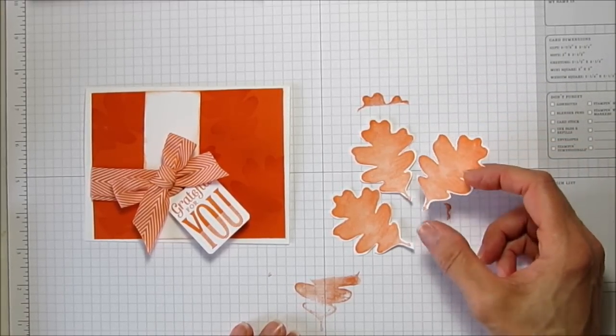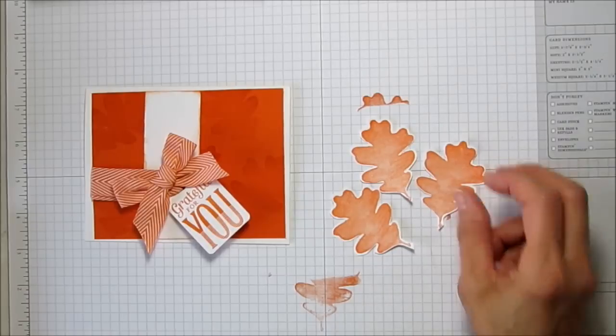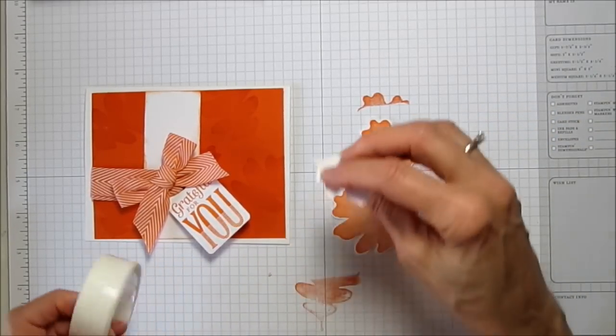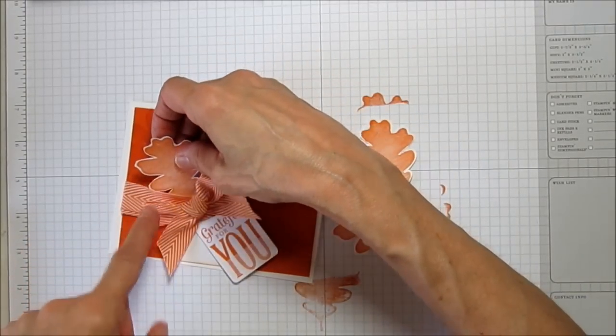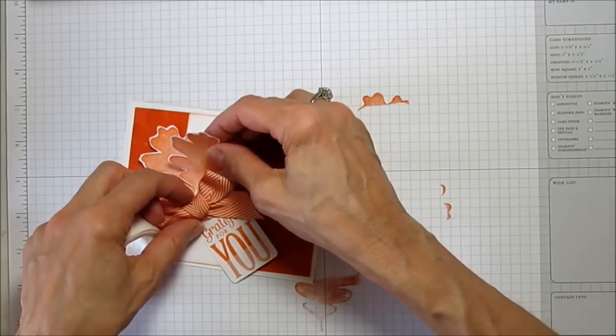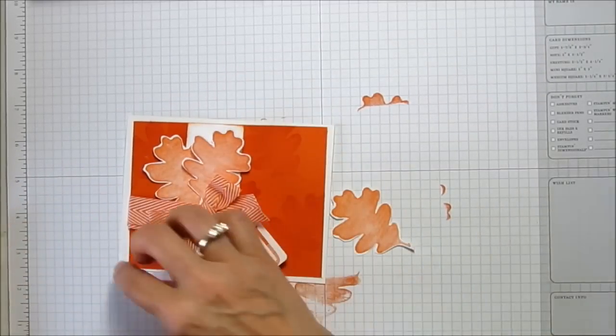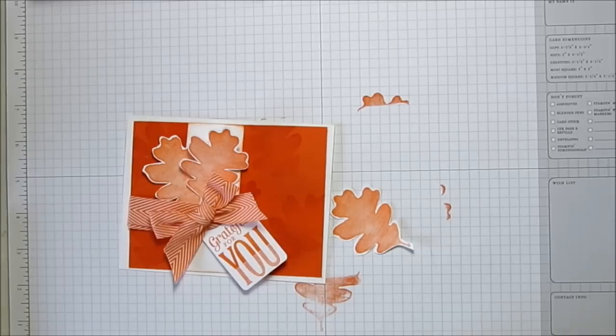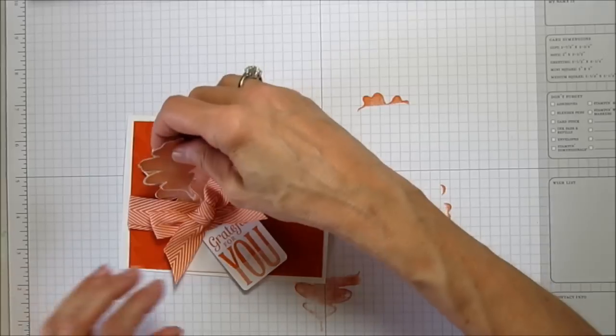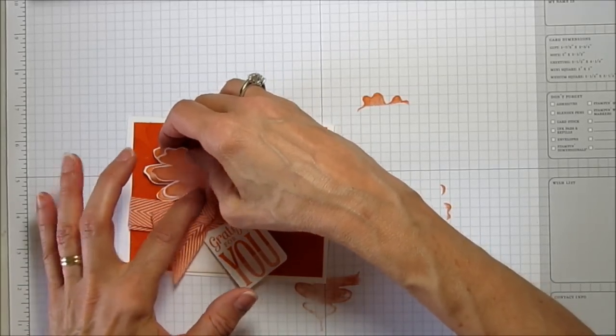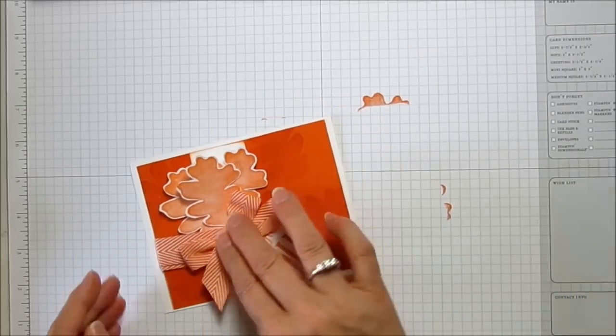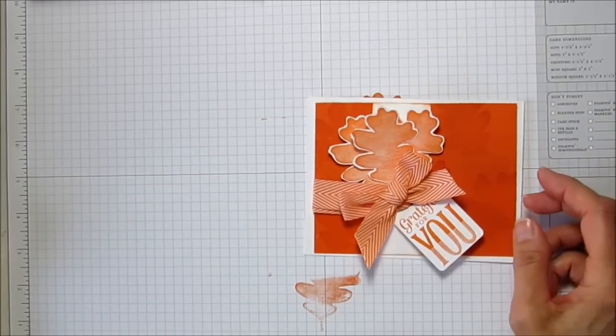It doesn't take much time at all to cut these out, but I didn't want to take your time on the video, so I went ahead and did that. I'm going to put glue dots and we are going to set these behind the ribbon. These glue dots stick to everything. Then we're going to do one more. It just gives it a bunch of dimension and I really love the leaves on there. It really makes the card I think.